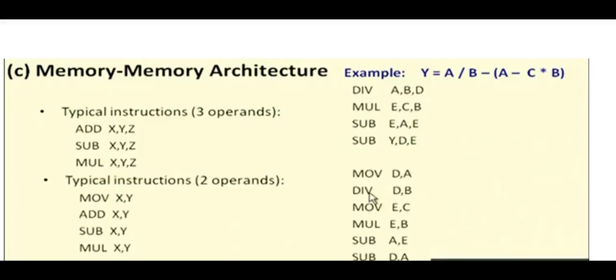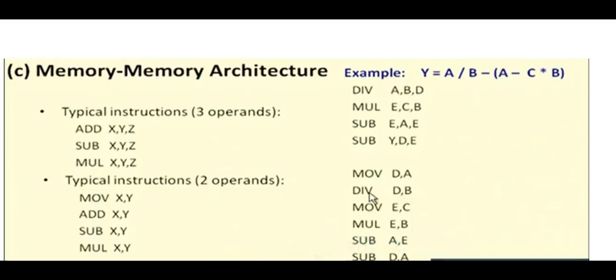The memory-memory based architecture uses either three operands or two operands. Typical two-operand instructions are: MOV X, Y — the value of Y is moved into location X; and ADD X, Y — the addition of X and Y is stored into location X. In this way, all memory-memory operations are performed.